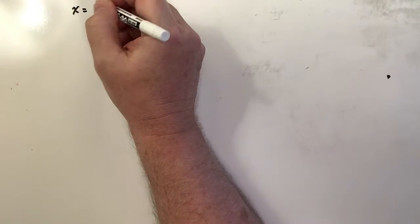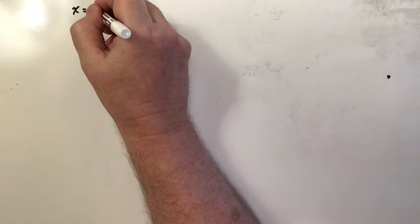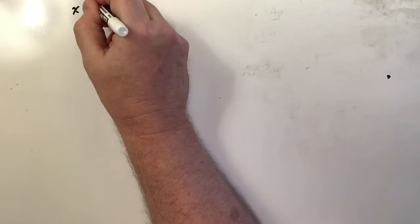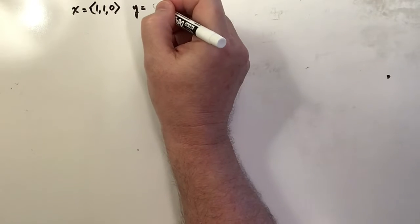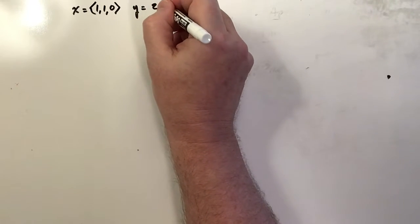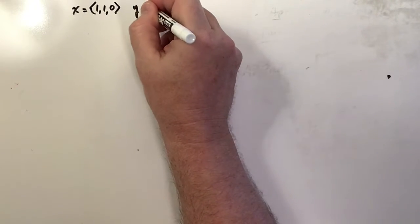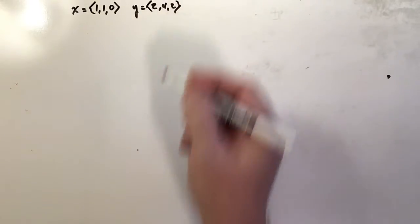Okay, this is spotlight problem number 12.3, and it features the use of the dot product in order to find a vector perpendicular to two existing vectors. Here's the setup: we first have vector X with components 1, 1, 0, and then we have vector Y with components 2, 4, 2.